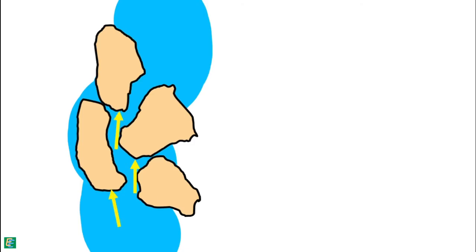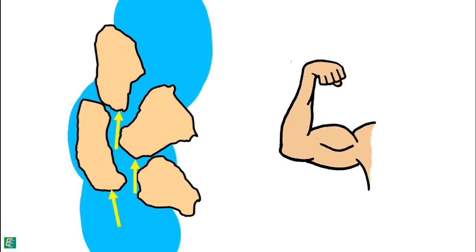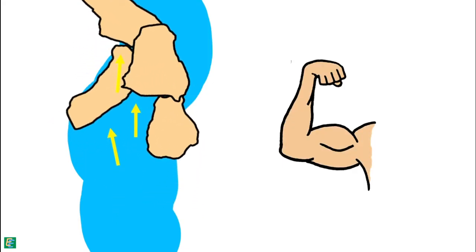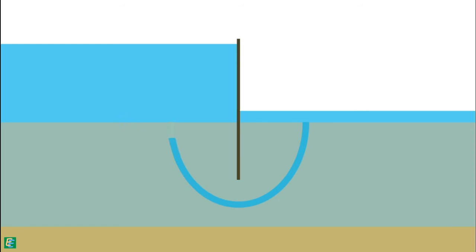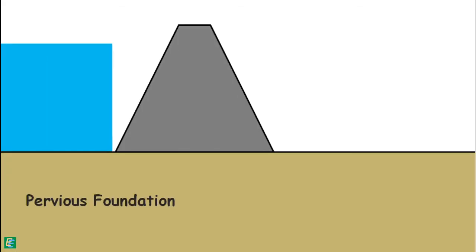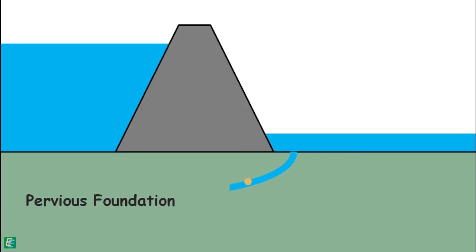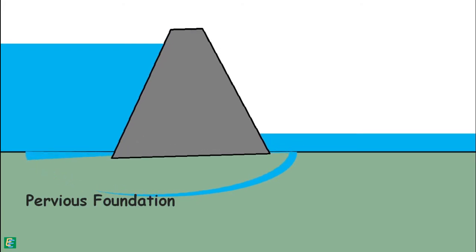When water flows in the soil in a horizontal direction, it exerts seepage force on the particles horizontally, and when it flows vertically, the force is exerted in the vertical direction. If this exerted force is strong, it has the capability to displace the soil particles and carry them away. This leads to a very serious problem in soil engineering — the development of channels in the soil — called piping.